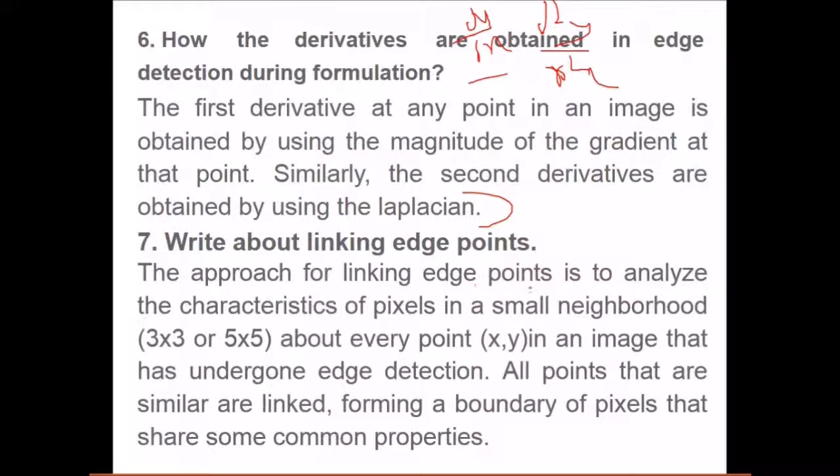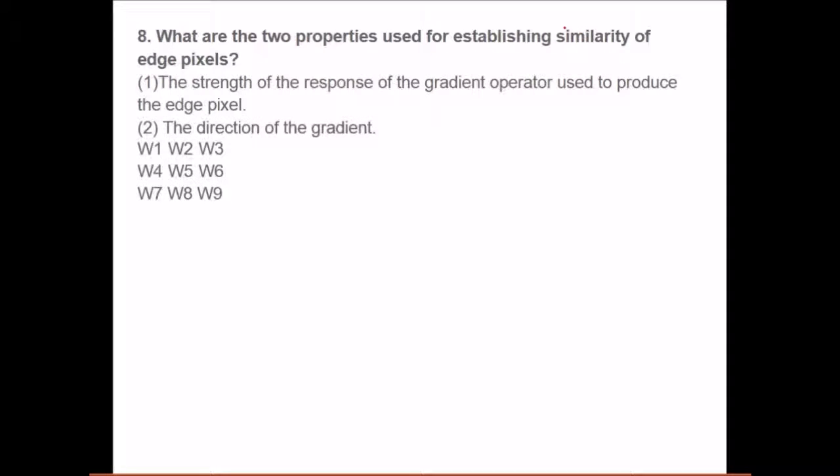The approach of linking edge points is to analyze the characteristics of pixels in a small neighborhood, 3 by 3 or 5 by 5 or 7 by 7, about every xy in an image that has undergone edge detection. All points that are similar are linked, forming a boundary of pixels that share common properties. What are the two properties used for establishing similarity of edge pixels? First is the strength of the response of the gradient operator used to produce the edge pixel, and second is the direction of the gradient. Strength of response and direction are used for establishing similarity of edge pixels.